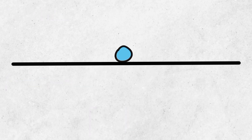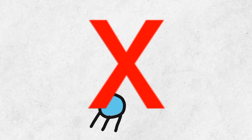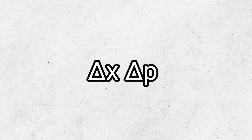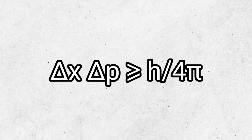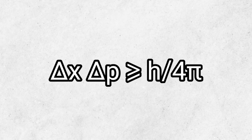But you can't know the exact position or exact momentum of a quantum particle. That's because of the principle's equation: uncertainty x times uncertainty p, greater than or equal to h over 4 pi, which is a very small number.